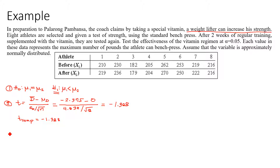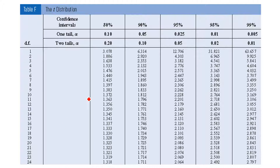For the tabular t value, our n equals 8, so degrees of freedom equals n minus 1, which is 7. We go to the t-table with alpha equals 0.05 and degrees of freedom of 7, one-tailed. Looking at the table, the tabular t value is 1.895.